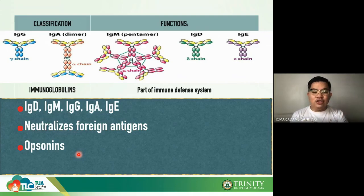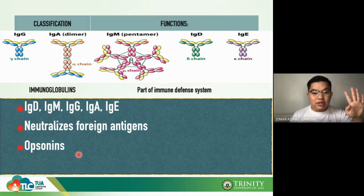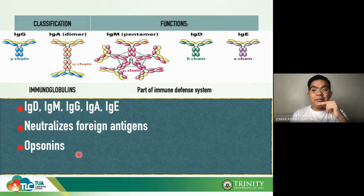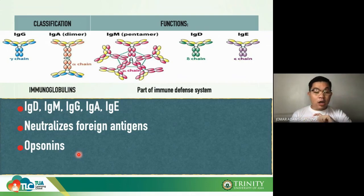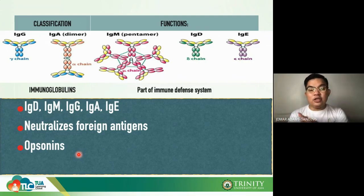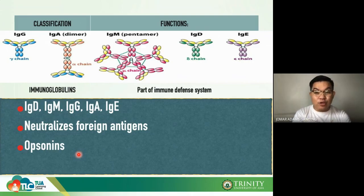A useful way to remember immunoglobulin classes from most abundant to least abundant is the mnemonic GAMED — G, A, M, E, D. So IgG is most abundant and IgD is least abundant.